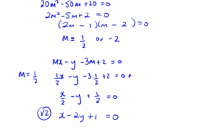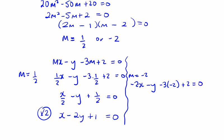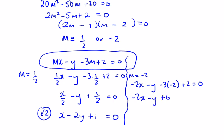For m equals −2: substituting gives −2x minus y minus 3(−2) plus 2 equals 0, so −2x minus y plus 6 plus 2 equals 0. Changing signs so x is positive: 2x plus y minus 8 equals 0. Double-checking: 2x plus y minus 8 equals 0.